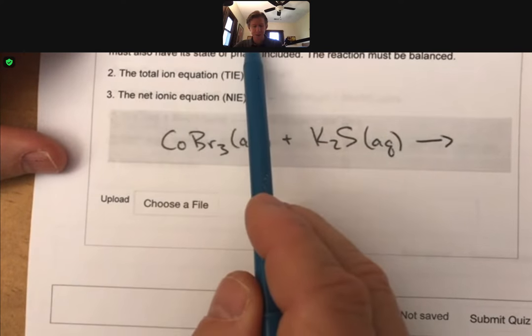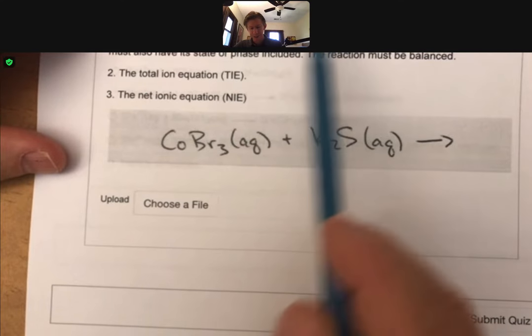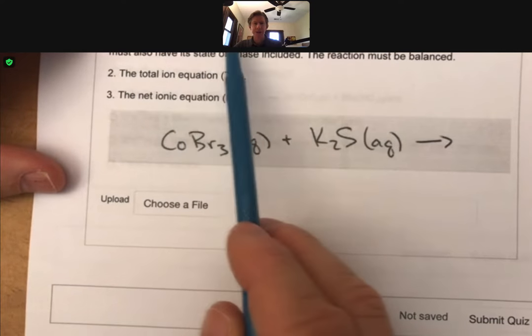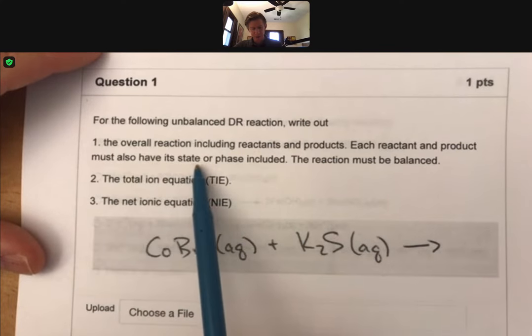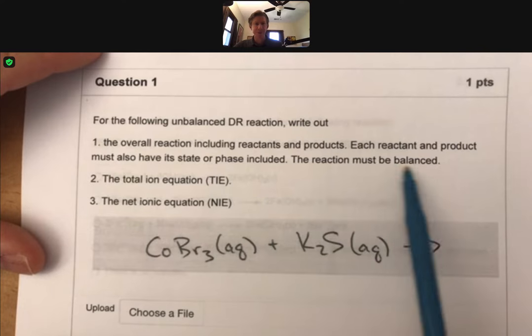The problem we have here says for the following unbalanced double replacement reaction, write out the overall reaction including reactants and products. Each reactant and product must also have its state or phase included. The reaction must be balanced.